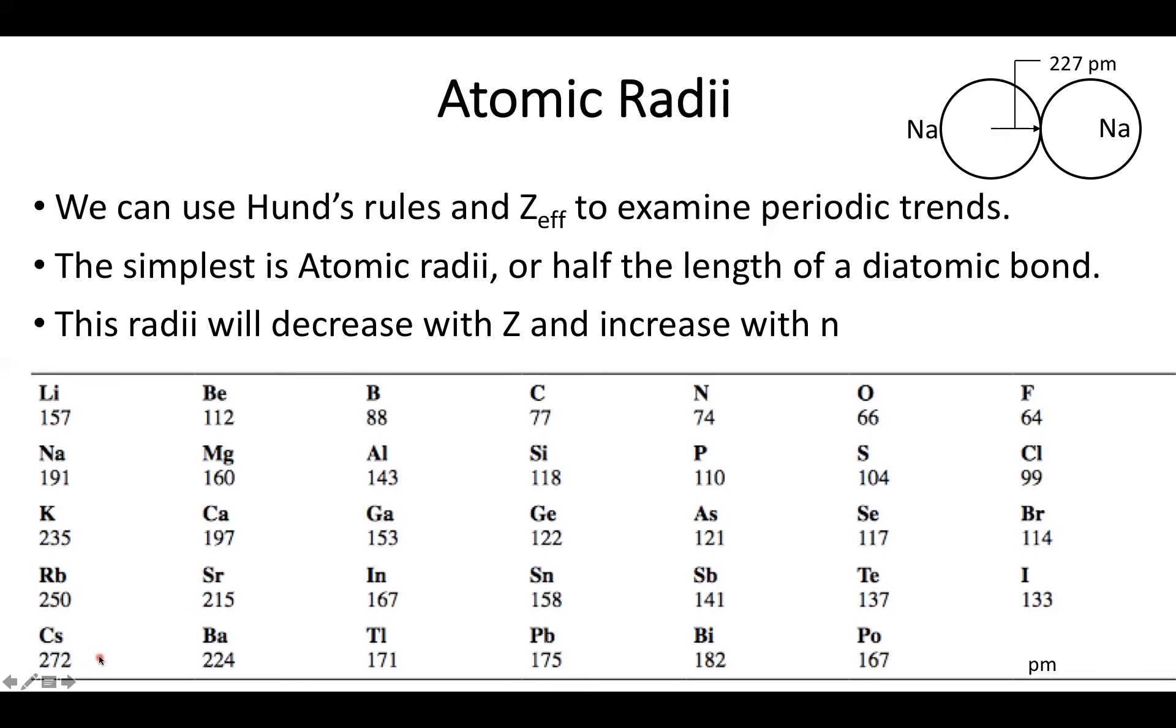So with the basic ideas of radii, ionization, and affinity, we can actually explain a lot of basic chemical trends. So this is a useful tool to kind of have in your back pocket. However, next time, we're going to slightly change topics as we're going to focus a little bit more on atomic spectroscopy. Until then, take care.